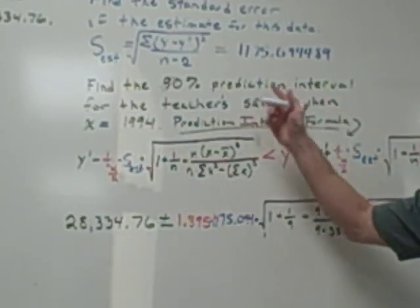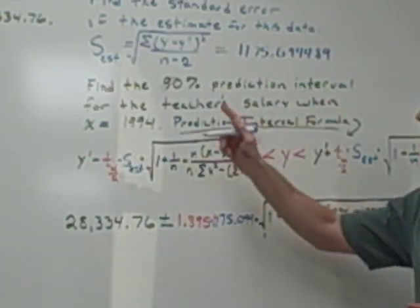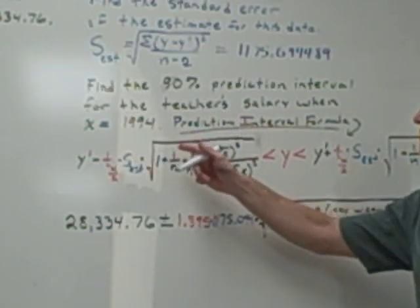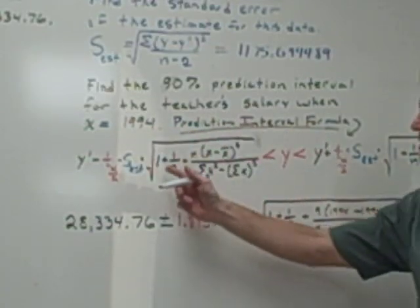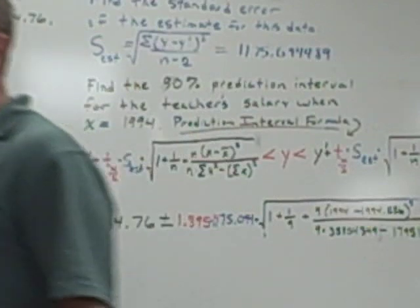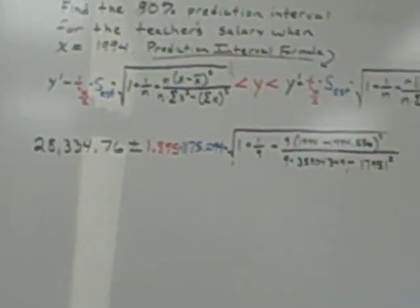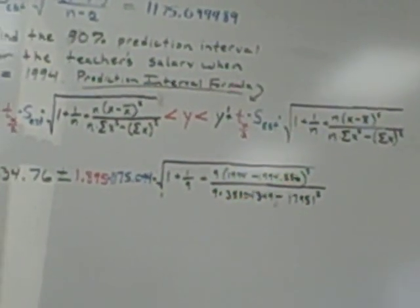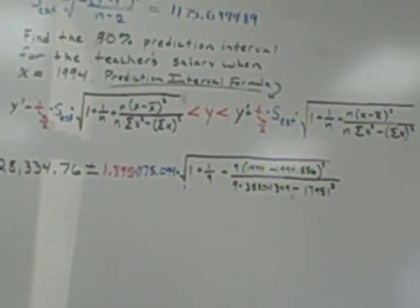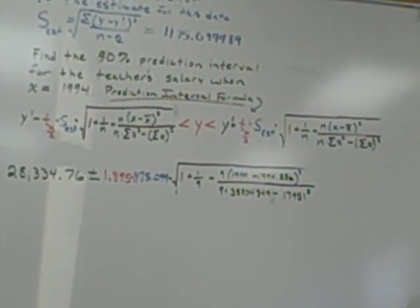Now, we're going to find the 90% prediction interval for the teacher's salary when X is 1994. The prediction interval formula is given here. So I'm going to make sure I have that all on camera for you.